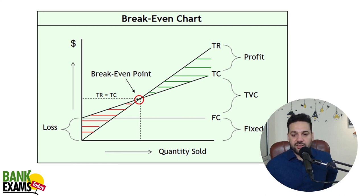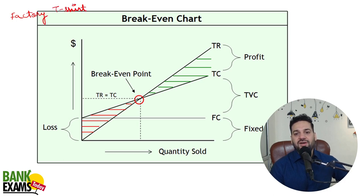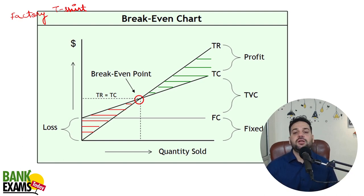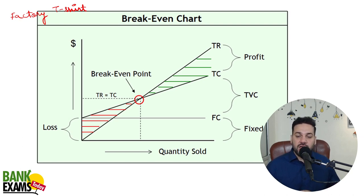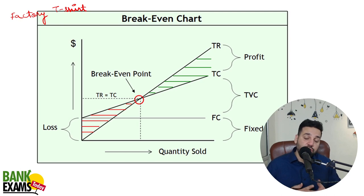Let's start with the break-even point chart. When you start a business — let's say you want to start a factory to make t-shirts — you need building, machinery, electricity connection, water supply, furniture and fixtures, lighting equipment. Even to make one product, you need all of that. Basic expenses you need, even if you are making zero t-shirts.